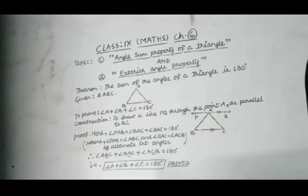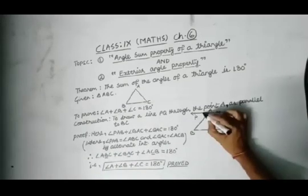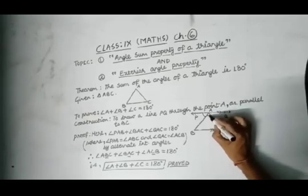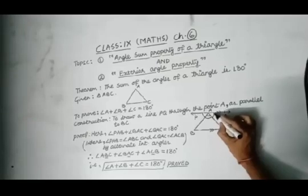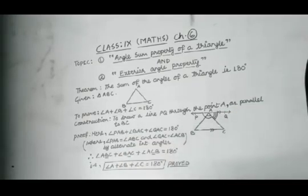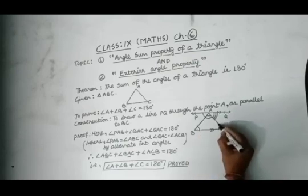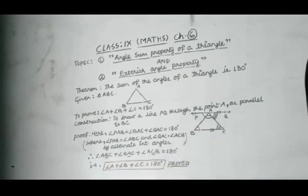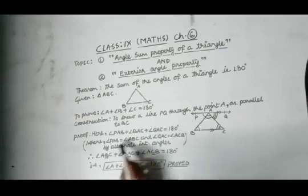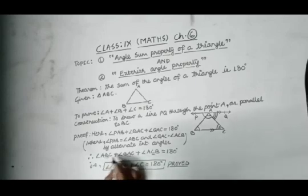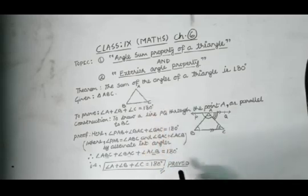Let's check the steps of proof. In this figure you could observe that the sum of these three angles — angle PAB, angle BAC, and angle QAC — equals 180 degrees. Here, angle PAB equals angle ABC and angle QAC equals angle ACB, with the reason being alternate interior angles. So PAB is replaced by ABC and QAC is replaced by ACB. This relation becomes angle ABC plus angle BAC plus angle ACB equals 180 degrees, which means angle A plus angle B plus angle C equals 180 degrees. That's proved.